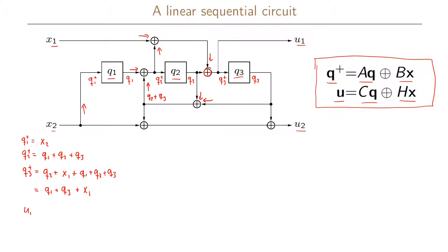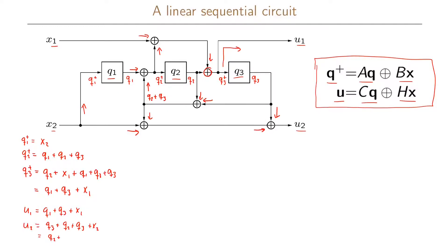For our output function u1, this is the same as q3+, so we can write it as q1 + q3 + x1. For the second output function u2, we take the XOR of the inputs: from the top we have q3, and from the left-hand side we have the sum q2 + q3 + x2. This simplifies to q2 + x2.